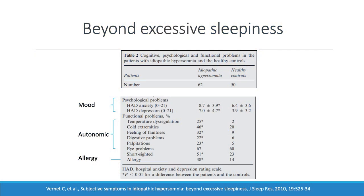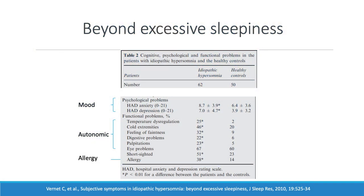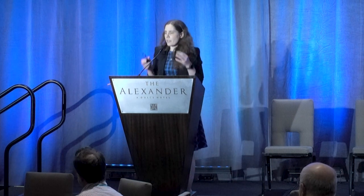There are a couple of ways to get at what the important comorbidities in IH are. One approach comes from researchers in France who are world experts in IH — they carefully looked at their well-characterized IH patients and asked what else was going on. They found that compared to healthy controls, people with IH have more mood symptoms including anxiety and depression, more symptoms suggestive of autonomic nervous system dysfunction across various body systems, and more allergy symptoms.